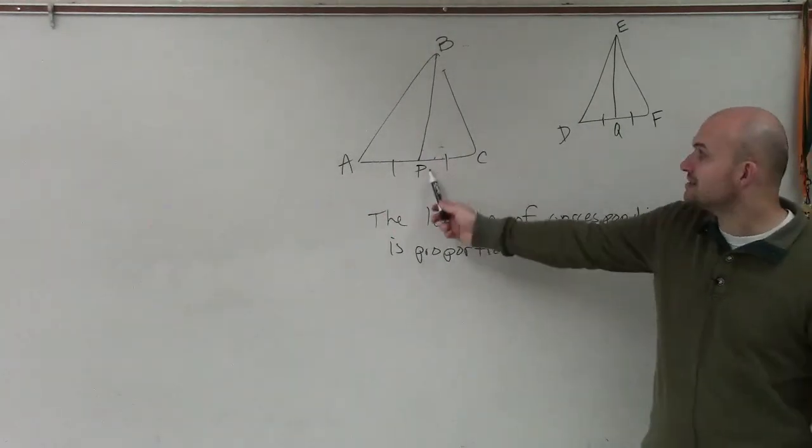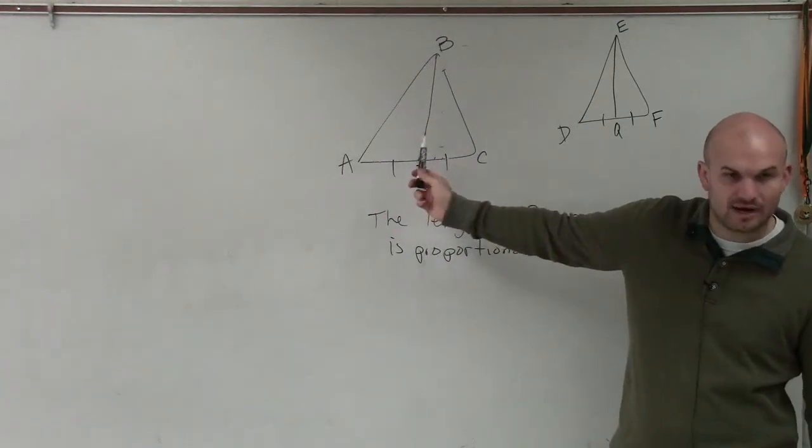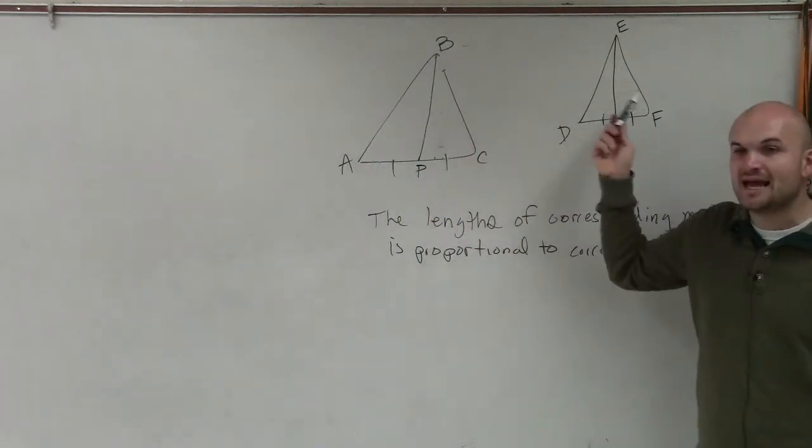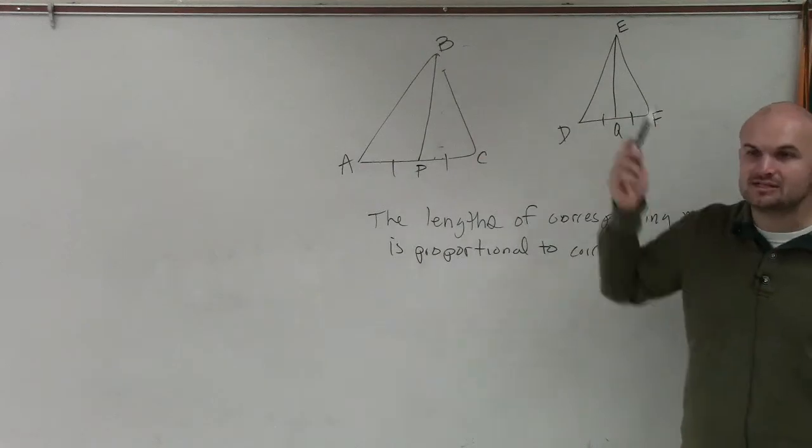So if this line is what we call a median, because it cuts the side in half, then we can say that these two lengths are proportional to the sides of the triangle.